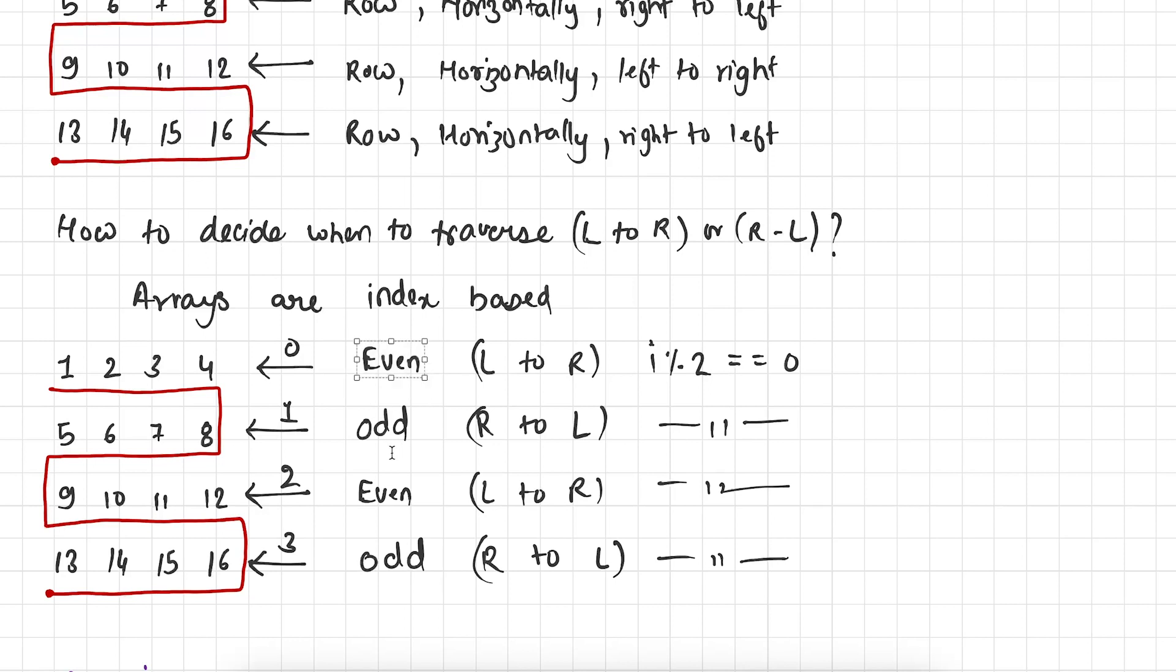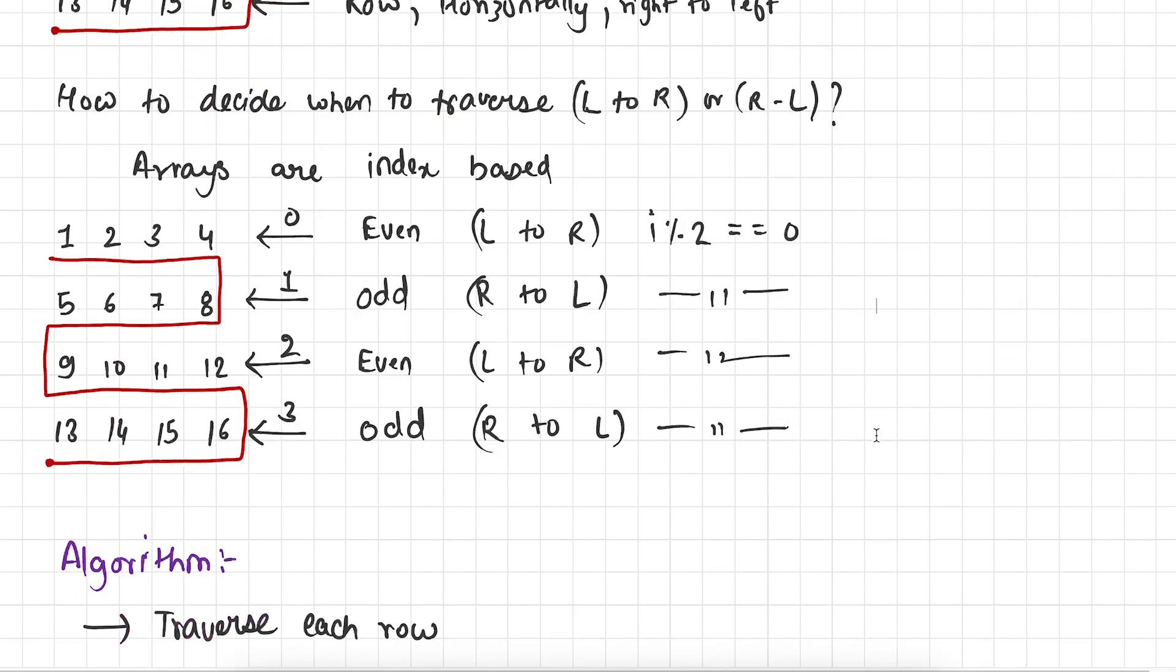These two rows are even rows. And other than these two rows, remaining rows are odd rows. And we know that how to determine if a number is even or odd. It's pretty simple. Just we have to do modulus 2. If it's equal to 0, this means we have to traverse from left to right. If this not equals to 0 then we have to traverse from right to left. This is the simple logic. So I hope guys till now you understood each and everything. So we are good to go to devise an algorithm to solve this problem.